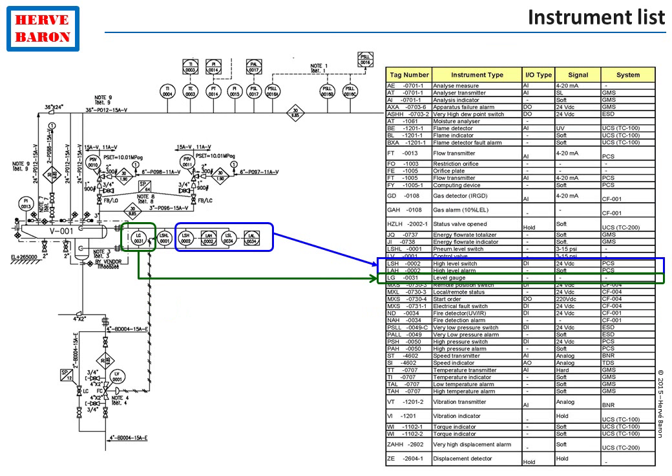The instrument engineer's first task is to produce the list of all instruments specified by process on the P&IDs. This forms the instruments list or instruments database, which is a central document for the instrumentation and automation discipline. It lists all the field instruments that need to be specified, as well as all the IOs — inputs and outputs — for the systems, and gives the capacity of these systems.